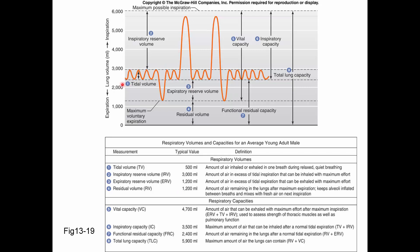This is a spirograph, a reading of volumes and capacities with a simple spirometer. We see tidal volume as a normal breath, in and out. If we breathe in and exhale as much as we can, we've exhaled our expiratory capacity — that's our tidal volume and our expiratory reserve volume. If we breathe back up to tidal volume, inhale, exhale, and breathe all the way up, we've introduced our inspiratory capacity, which is made of the tidal volume and the inspiratory reserve volume.